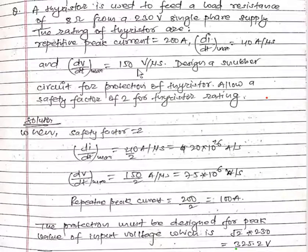dV/dt max is 150 volt per microsecond. We have to design the snubber circuit for the protection of thyristors, and here we have given the safety factor of 2.